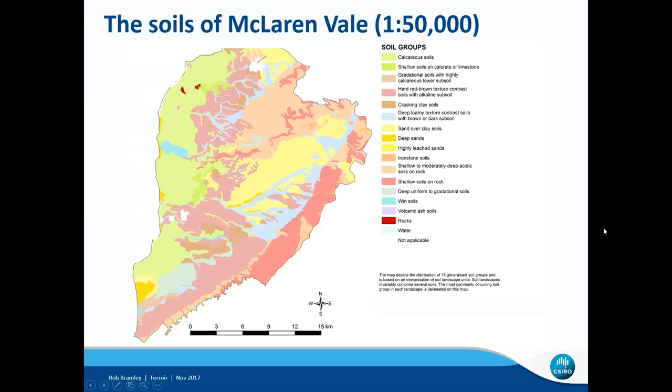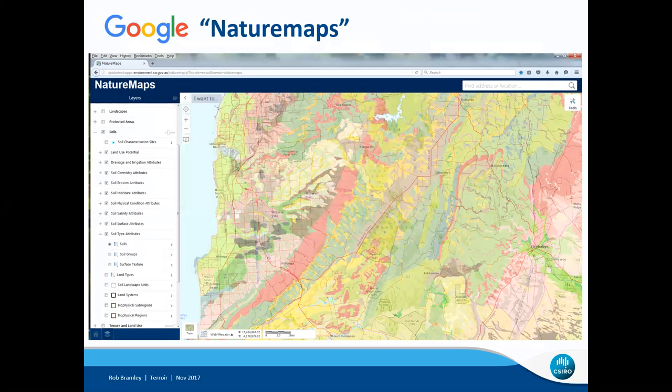If you're interested in having a look at this map in more detail, do a Google search on NatureMaps, which is a state government website. If you click on the layers button highlighted in the pink circle, you can play around and look at both soil variation and variation in a number of other things. This is the same 1:50,000 soil map as before, and you can do some recreational GIS-ing if you wish.